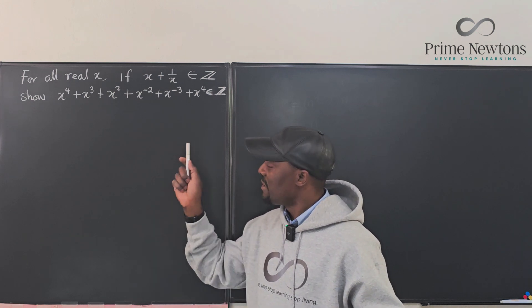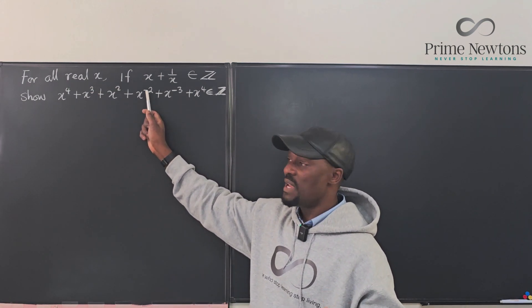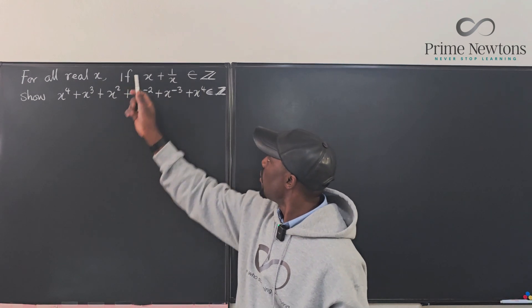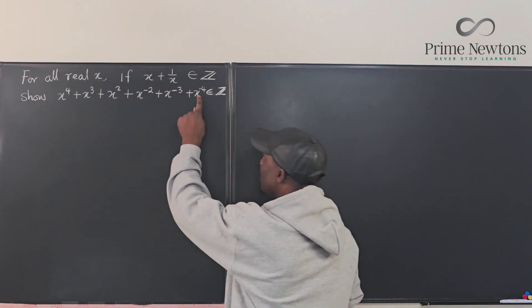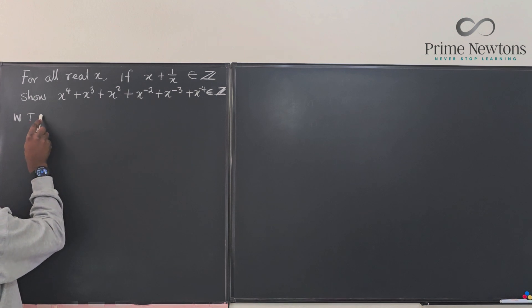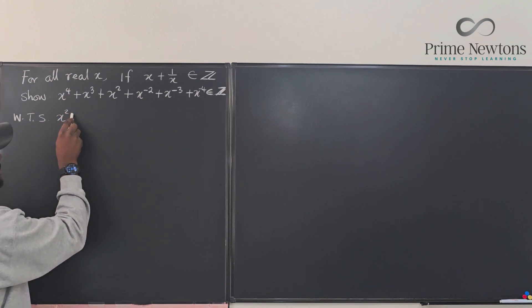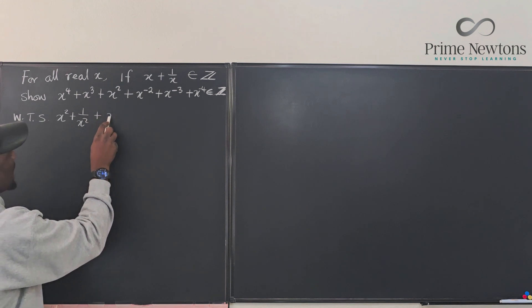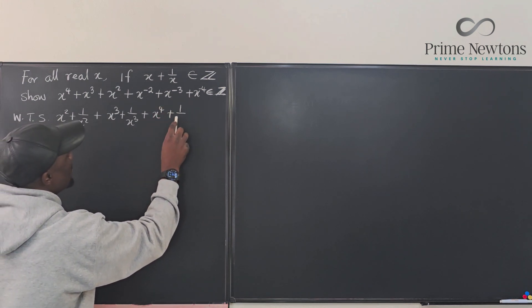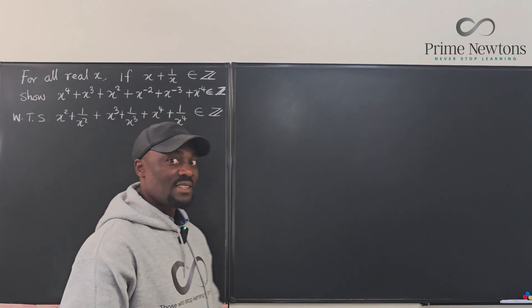The first thing I'm going to do is take a close look at the expression. It's x to the fourth plus x cubed plus x squared plus x to the negative 2. So x to the negative 2, which is 1 over x squared, will have to be paired up accordingly. We want to show that x squared plus 1 over x squared, plus x cubed plus 1 over x cubed, plus x to the fourth plus 1 over x to the fourth, is an integer — given that x plus 1 over x is also an integer.